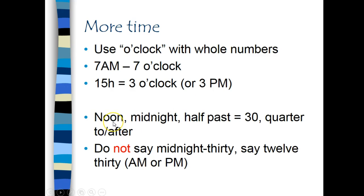Next, we have words to describe the time. Noon means 12 o'clock during the middle of the day. Midnight is 12 o'clock in the middle of the night. And half past equals 30, meaning half past the hour. And of course, quarter to and quarter after. But do not say midnight-thirty or noon-thirty. We say 12:30.